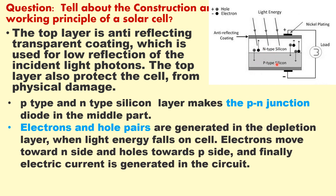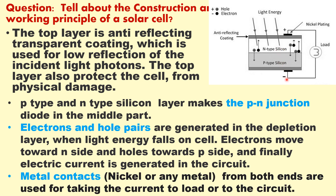When light falls on the PN junction, electron-hole pairs are generated in the depletion region. The electrons move towards the N side and holes towards the P side, generating electric current in the circuit. To pass this current to the external circuit, metal electrodes or contacts are placed on both sides — here it is nickel — and these are used to take the current to the load, which may be any device or a battery being charged. This is the working principle of the solar cell based on the PN junction diode.